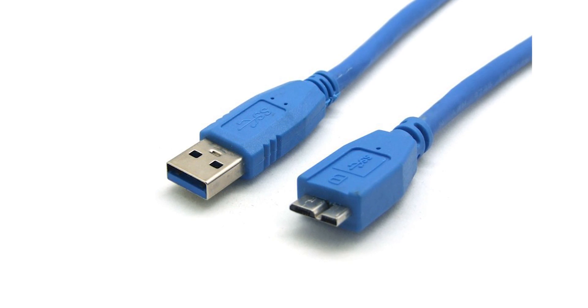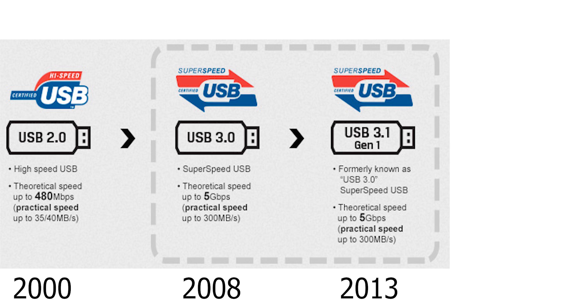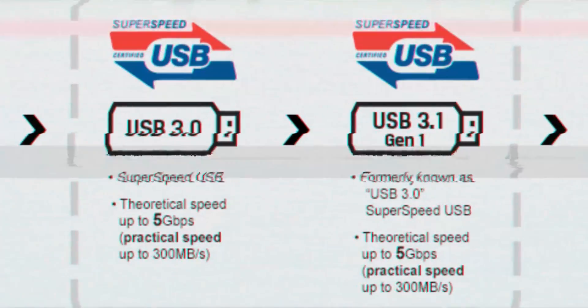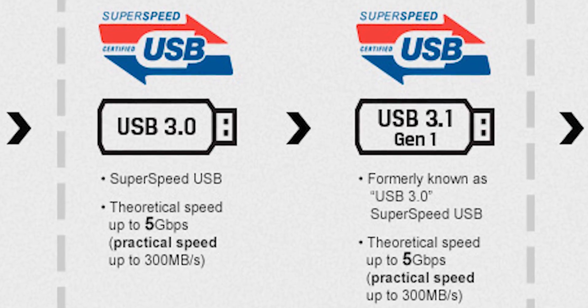We then moved to USB 3. USB 3 is still 11 years old. USB 3 is not only 5 Gbps — we also moved to USB 3.1 standards. When you say USB 3.0, that is like USB 3.1 Gen 1. Then USB 3.1 Gen 2 is 10 Gbps speeds. This naming caused a lot of confusion.